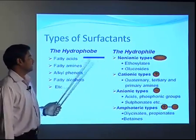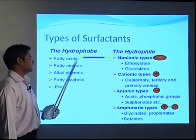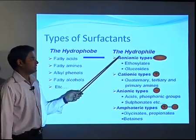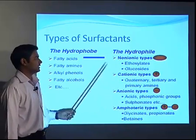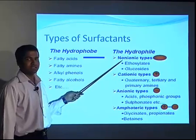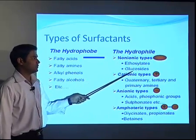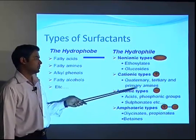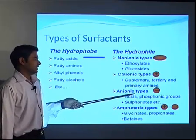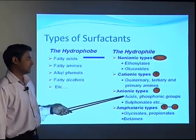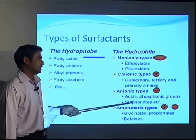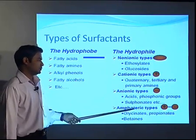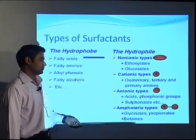There are various kinds of surfactants, depending on the hydrophobe (tail part). The tail may be fatty acid, fatty amine, alkylphenols, fatty alcohols, or other things. The hydrophile (head group) tells you what kind of surfactant it is. If the head group is non-ionic, it is a non-ionic surfactant — the head may be ethoxylate or glucosides. When the head group is positively charged, it is a cationic surfactant; the head may be quaternary, tertiary, or primary amines, for example NH4+. If the head group is negatively charged, it is anionic — examples include phosphonic acid groups and sulfonates, such as RCOO⁻Na⁺. Amphoteric surfactants have both positive and negative charges, generally composed of glycinate, propionates, or betaines.